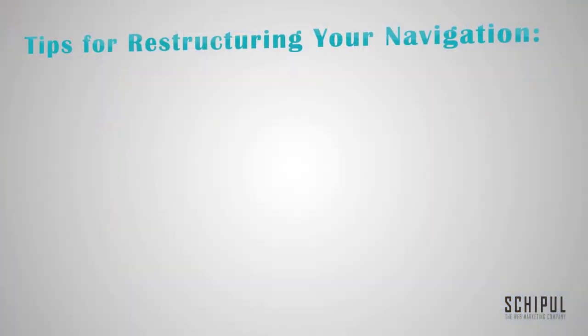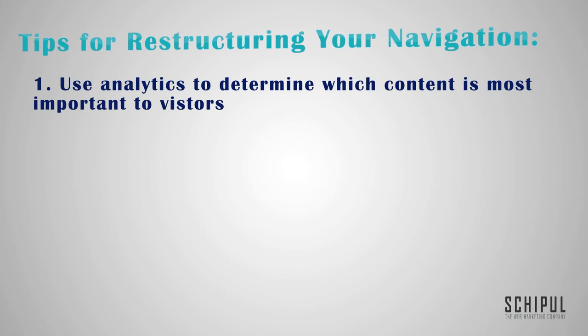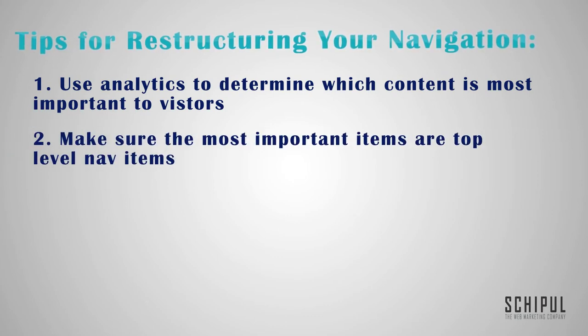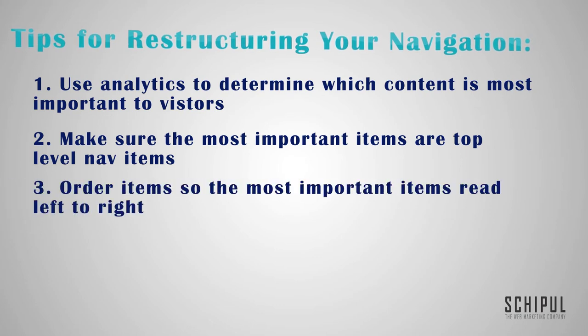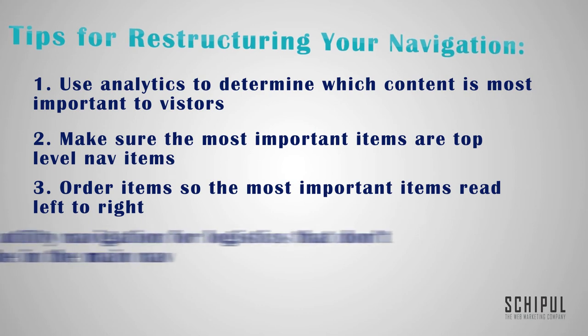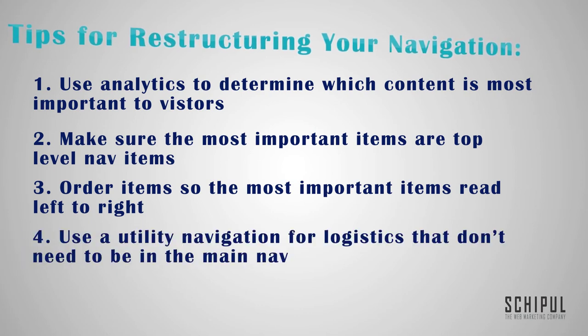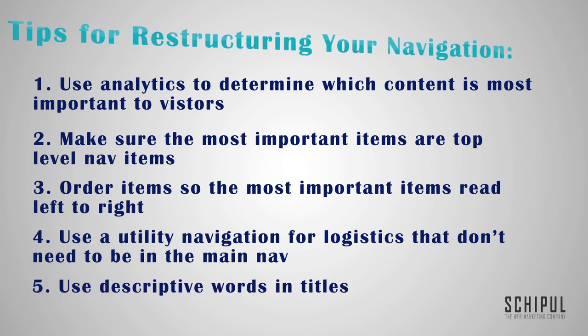Here's an overview of tips for restructuring your navigation: use analytics to determine which content is most important to your visitors; make sure the most important items are top-level nav items; order items so the most important ones read left to right; use a utility navigation for logistics that don't need to be in the main nav; and use descriptive words in titles. I hope that was helpful for you guys — good luck restructuring your navigation.